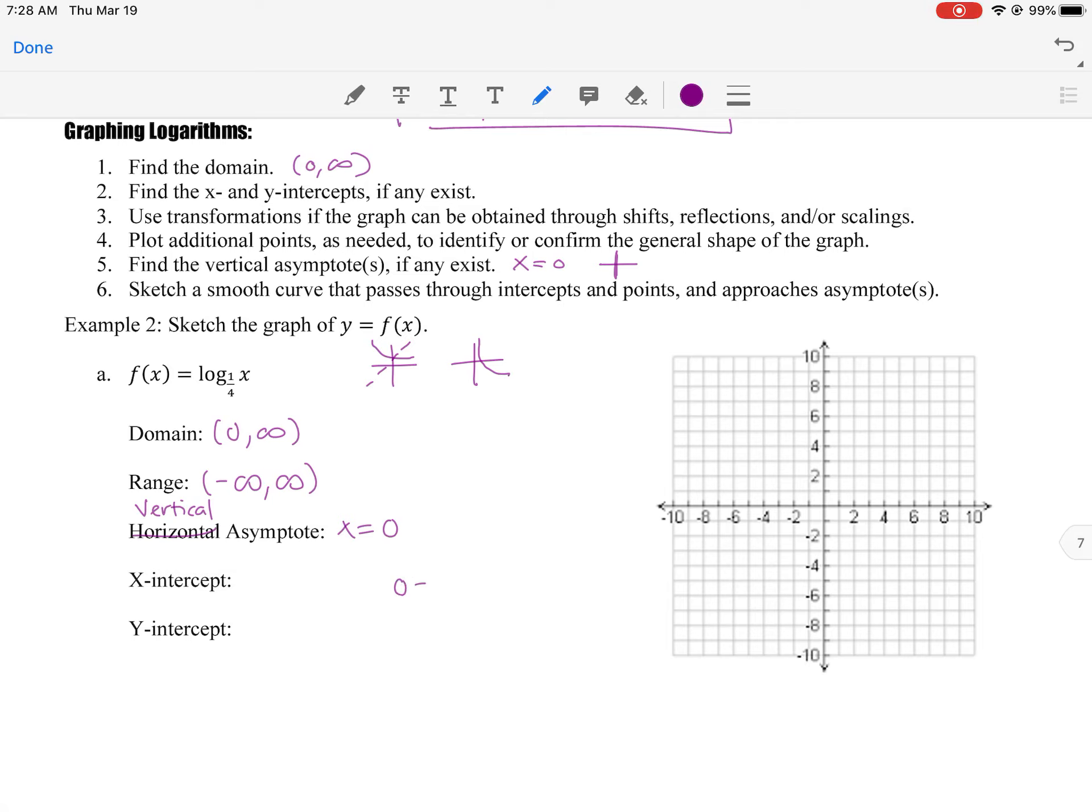As for the x intercept, think about setting 0 equals log of one-fourth of x. So then we could rewrite this. We're saying, hey, one-fourth to the 0 power equals x. So that's 1 equals x, right? So x does equal 1. Here for the y intercept saying 0, plugging 0 in, log of one-fourth of 0. Remember, we can't have 0 as an input. It's got to be something greater than 0. So the y intercept does not exist, which makes sense because there's an asymptote there.